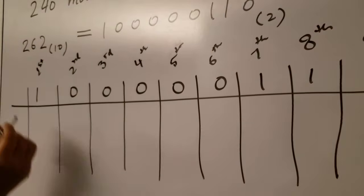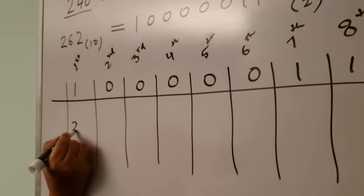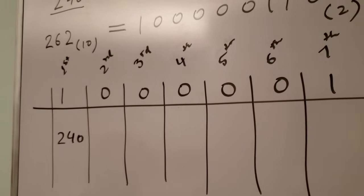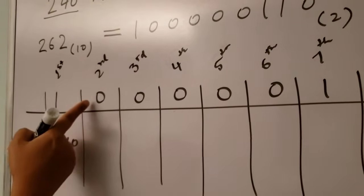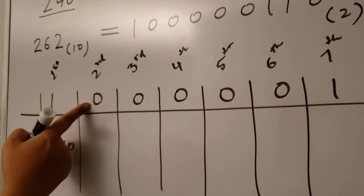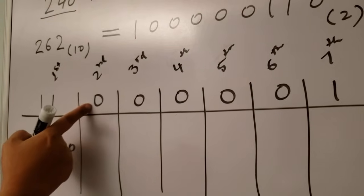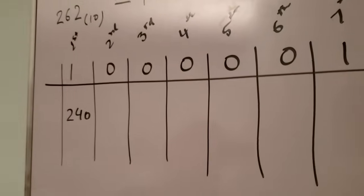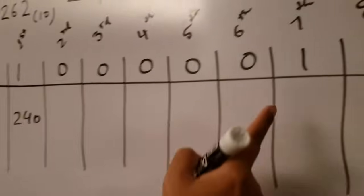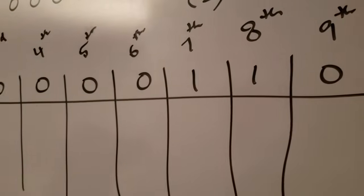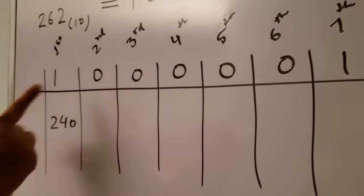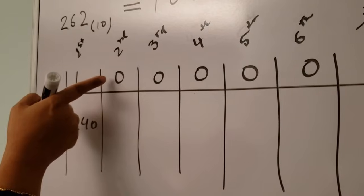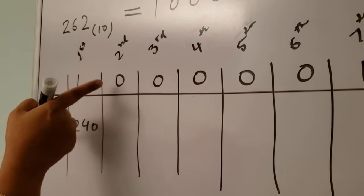Write down the base, which is 240, in the first column. Now look at the binary digit of the second column, which is zero. If the binary digit is zero we have to do only one step, and if the binary digit is one we have to do two steps. Let's start working on the second column where the top binary digit is zero.